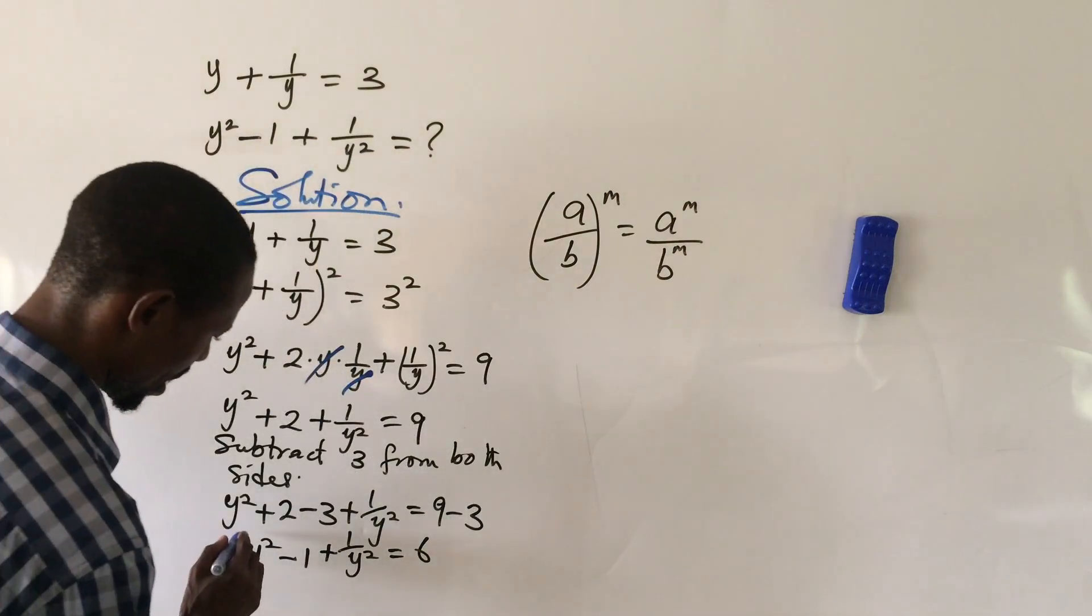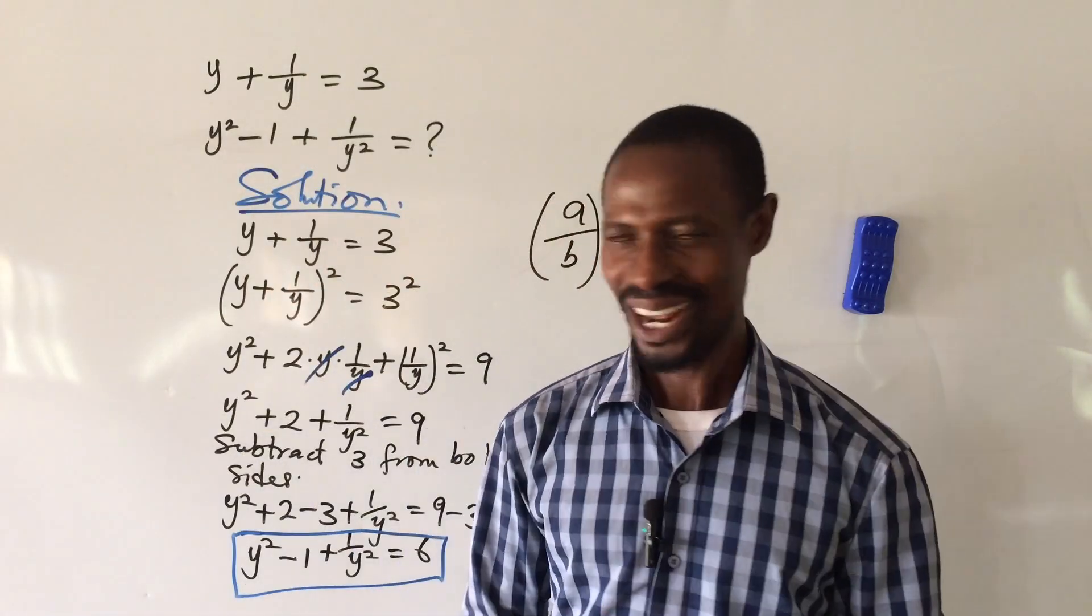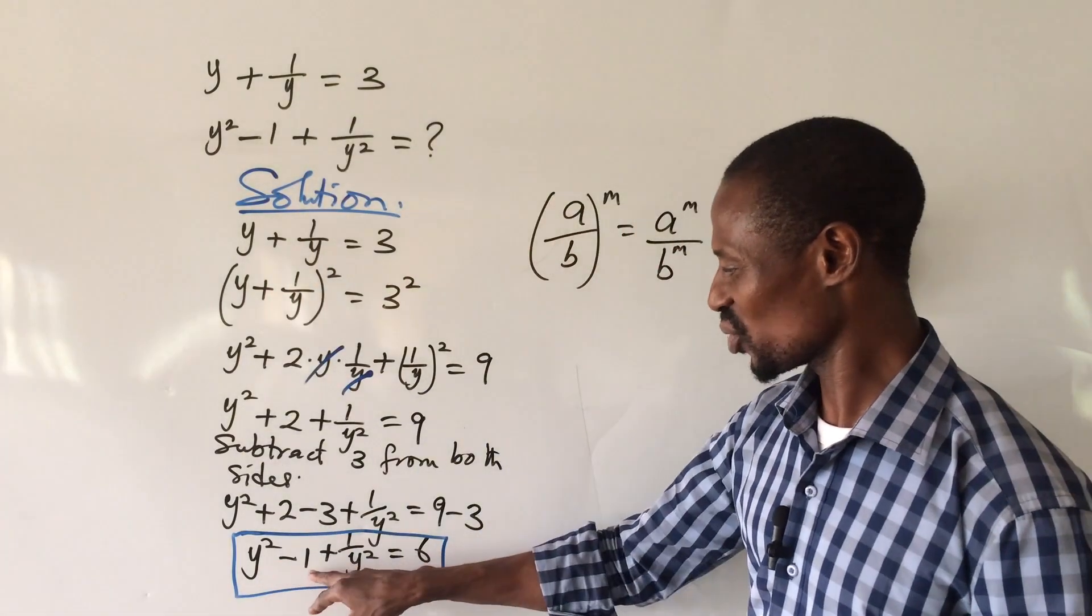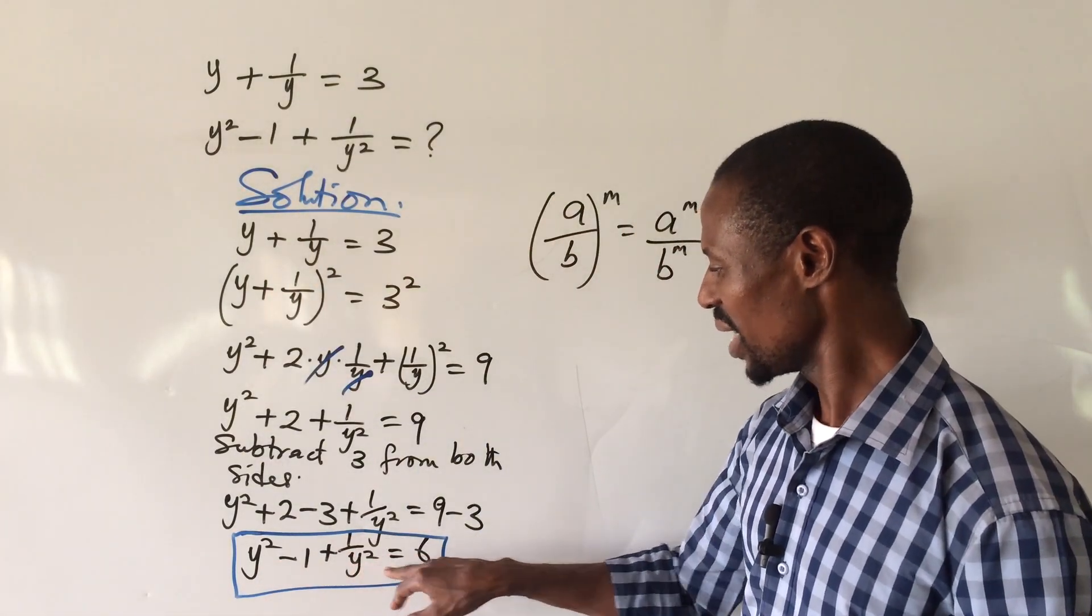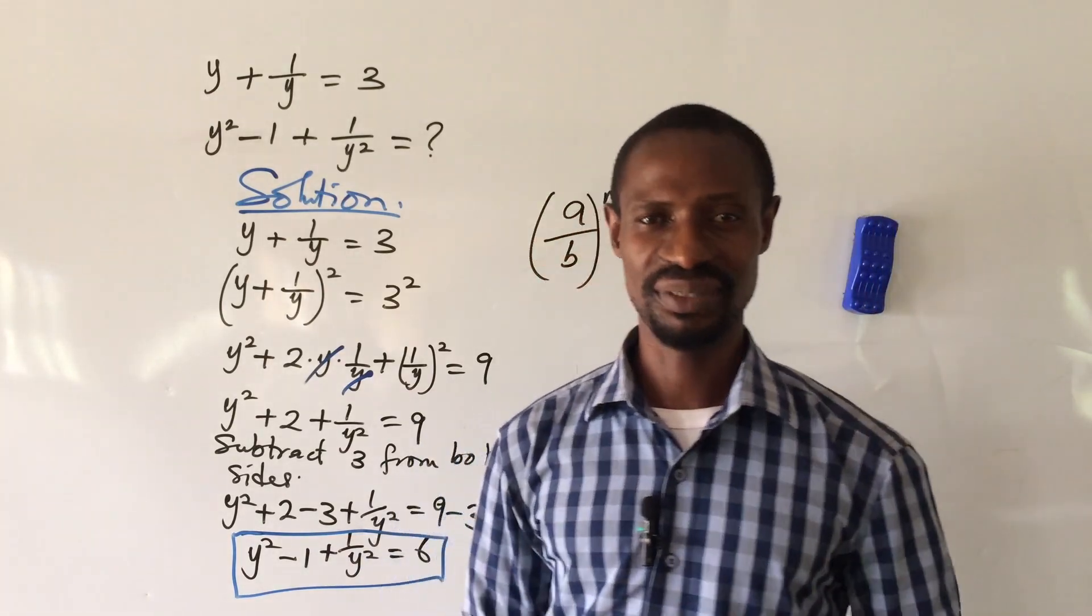So y squared minus 1 plus 1 over y squared equals 6. Simple! If you've learned something from this short video, give the video a thumbs up.